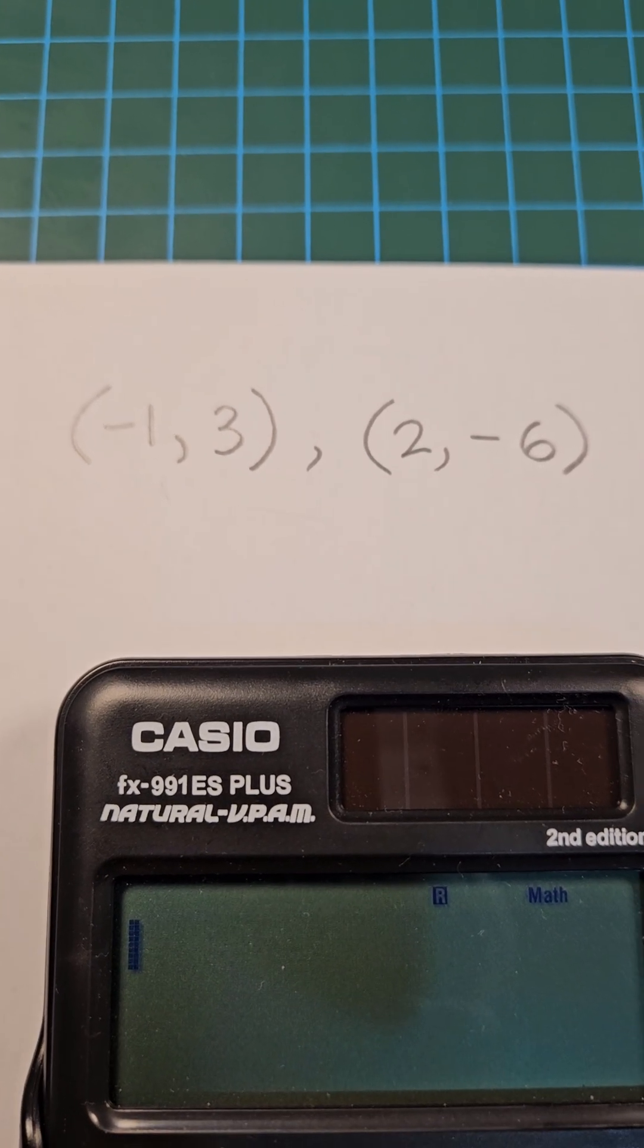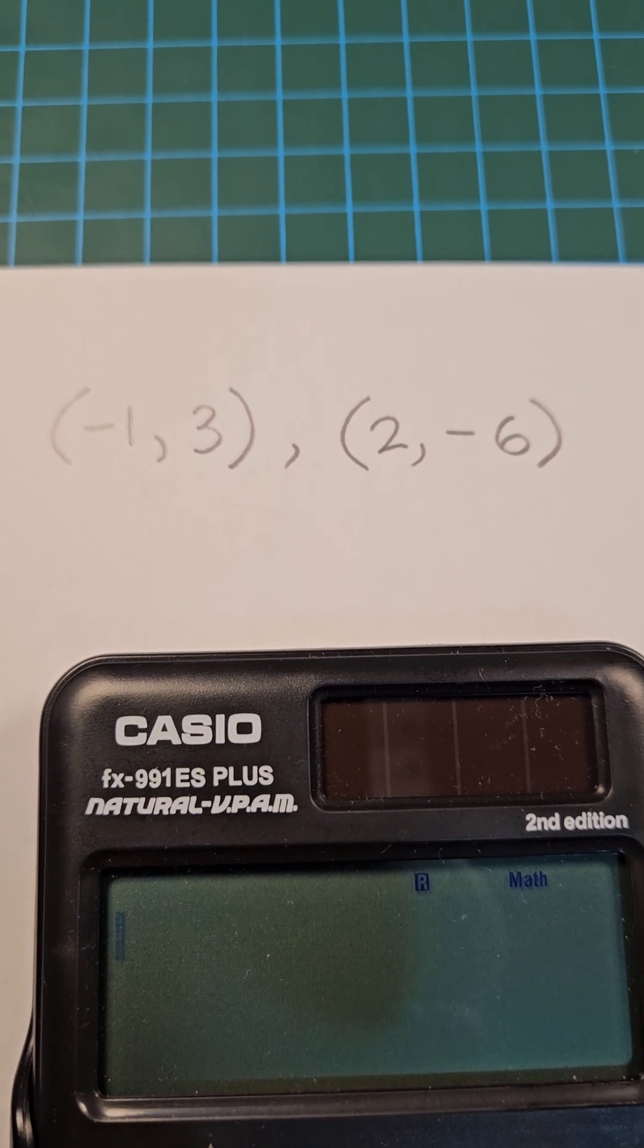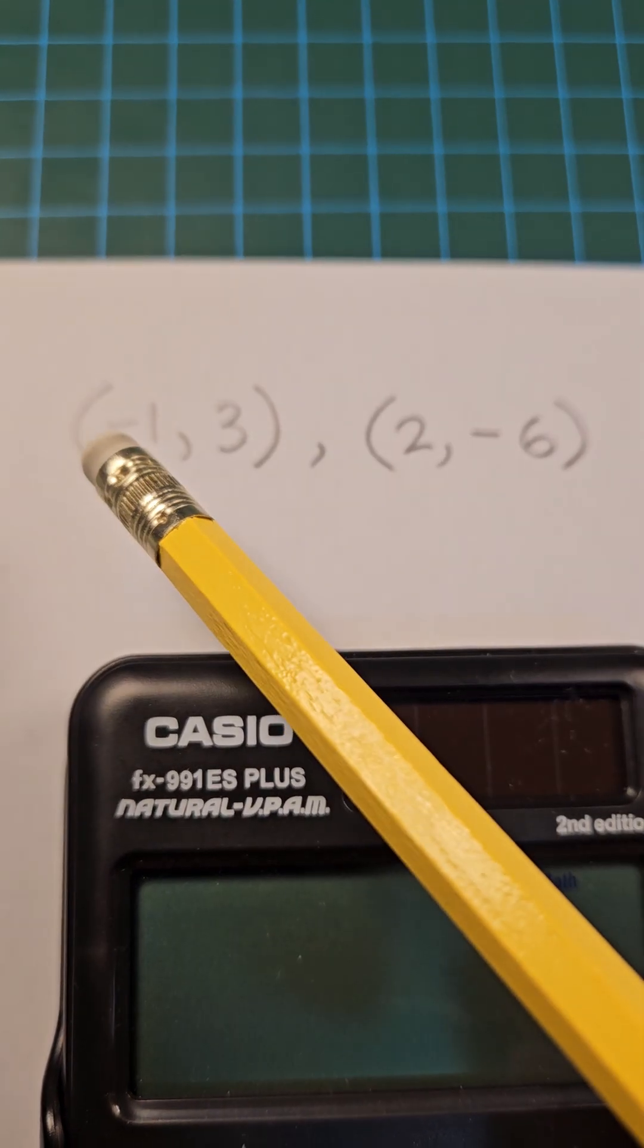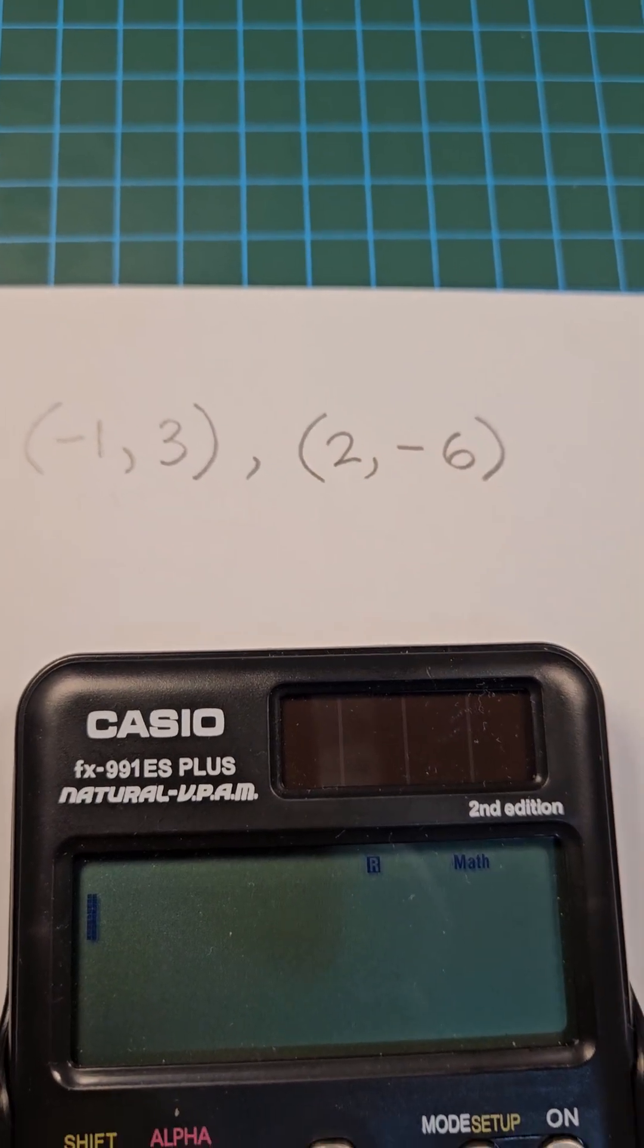Let's say we want to find the equation in gradient intercept form, that's y equals mx plus c, passing through the points (-1, 3) and (2, -6).